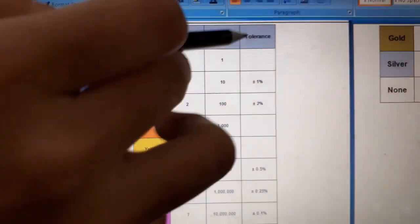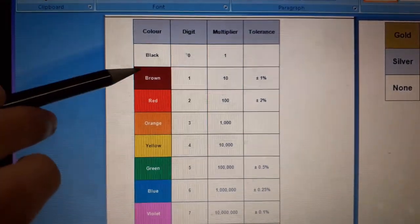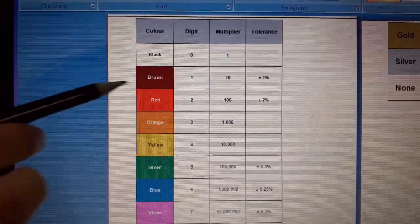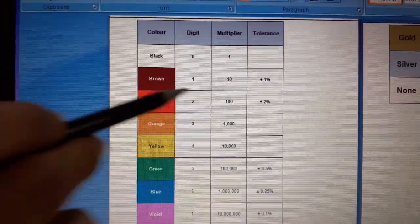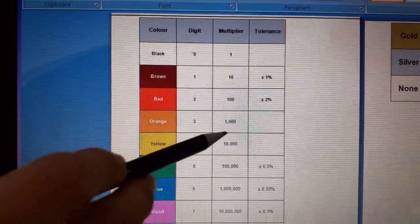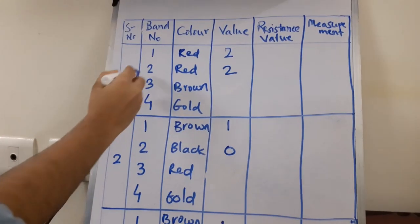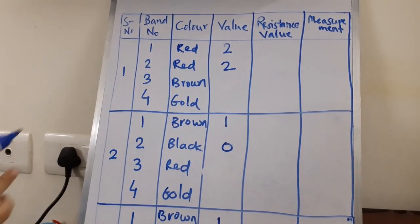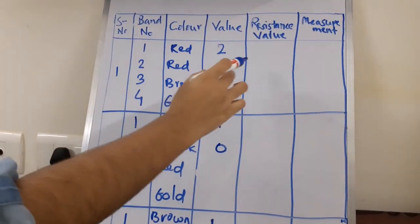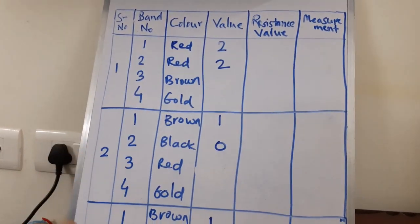Now let us have a look at the multiplier. We are going to use only three colors: brown, which is ten; red, which is hundred; and orange, which is one thousand. The third band is for the multiplier. So now let us enter the multiplier value for all three resistors.